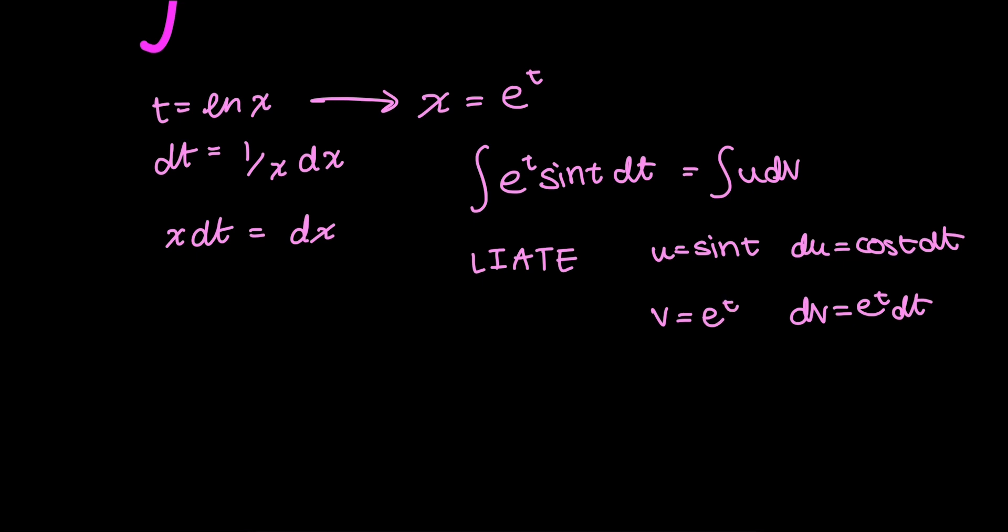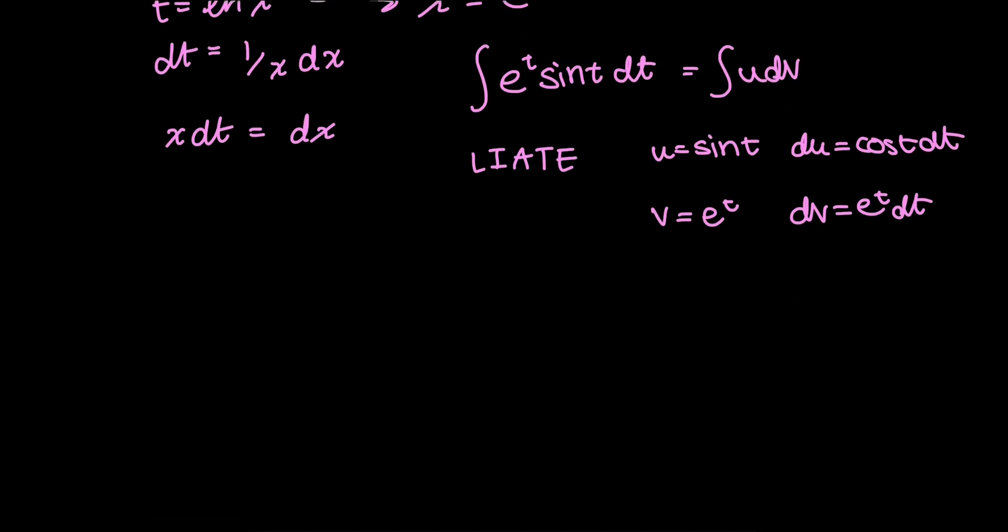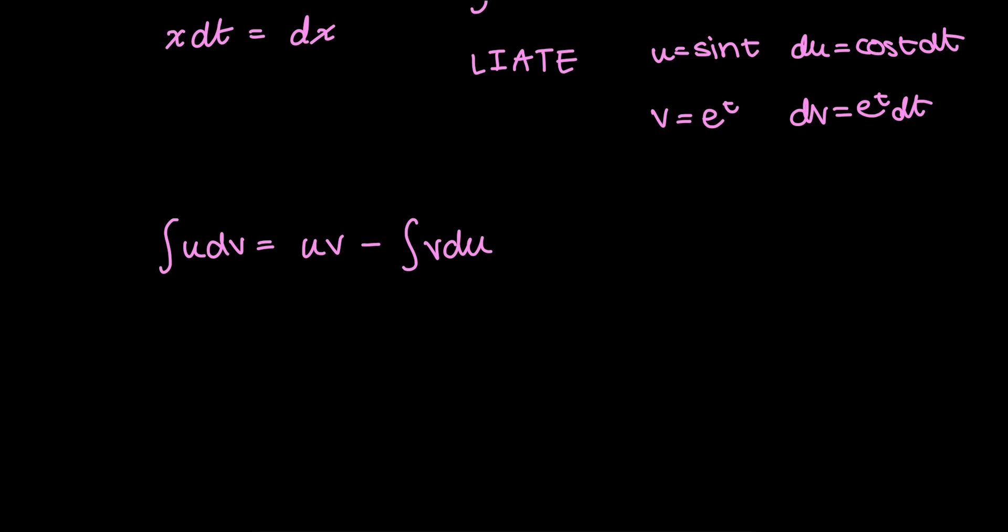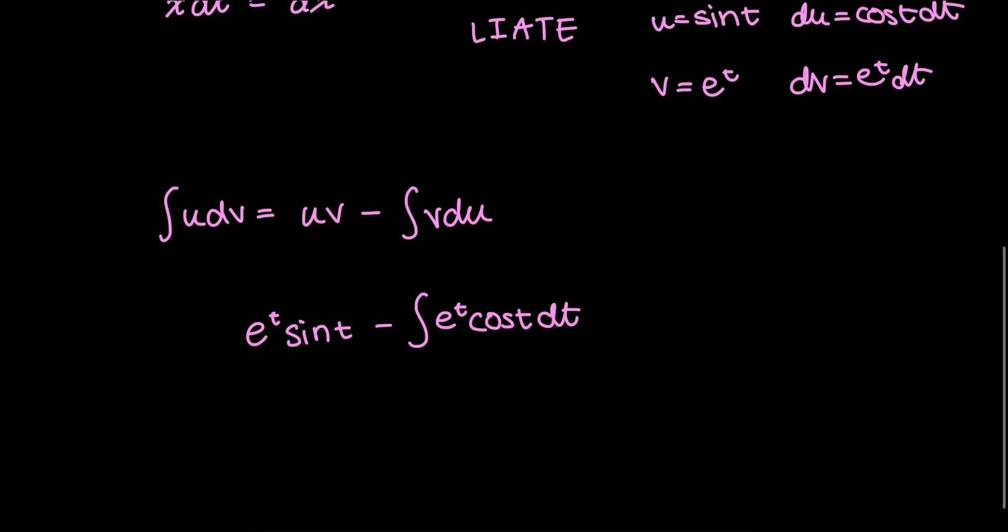And now we rewrite our integral using the definition for integration by parts, where if I have an integral in the form u dv, then it becomes u v minus the integral of v du. And that's just the definition of integration by parts. So plugging everything in, we get e to the t sine t minus the integral of e to the t cosine t dt. And of course, this is equal to the integral of e to the t sine t dt.